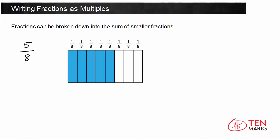Take a look at the fraction 5 eighths. Here I have a model that represents this fraction because there are 8 total parts in this model and there are 5 parts in blue, so this is the fraction 5 eighths. Now each of these strips represents 1 eighth. If we were to write this as an addition sentence, we'd have 1 eighth plus 1 eighth plus 1 eighth — making sure we get all 5 in — that's the fraction 5 eighths.